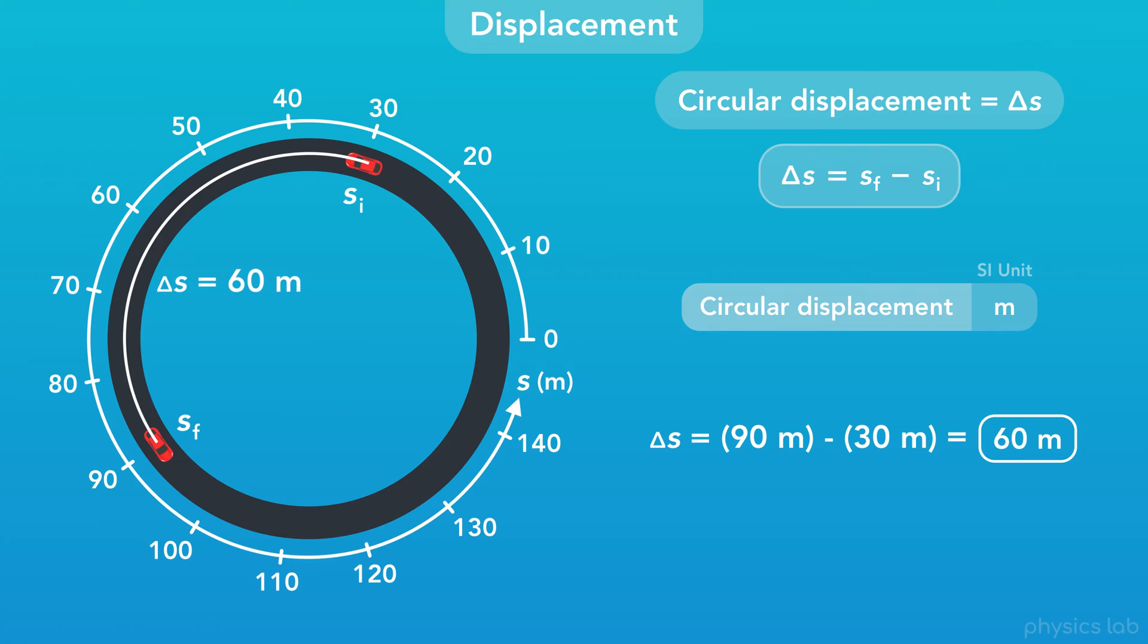And remember, this displacement is not a straight line between the initial and final points. This is the circular displacement of the car around the circular path. It's also the length of this arc, which is why we sometimes also refer to delta s as arc length.